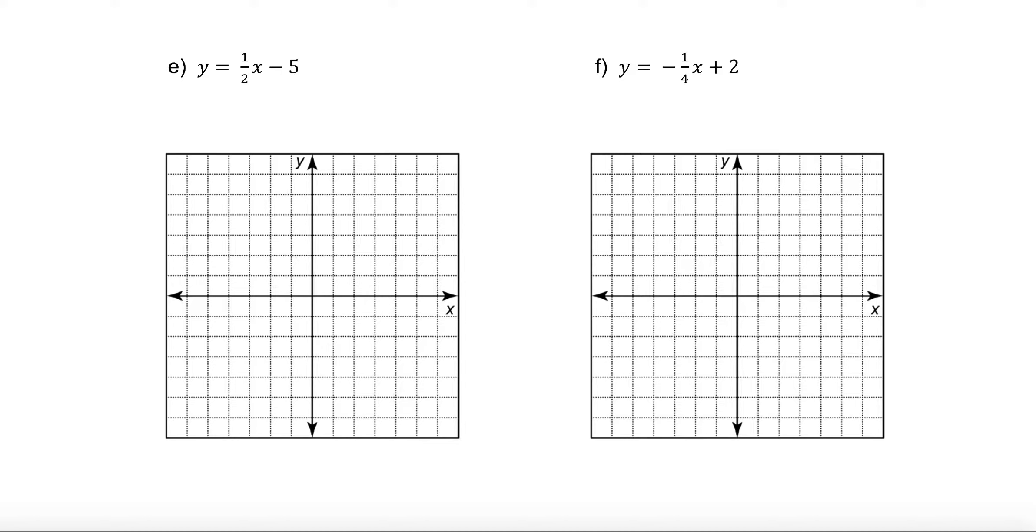A couple more. Y equals 1 half x minus 5. Right away, you know that the negative 5 is where you start. I go there, I put a point there. From there, I go up 1 and over 2. Up 1 and over 2. Up 1 and over 2. I might go in the other direction as well just to be really safe.